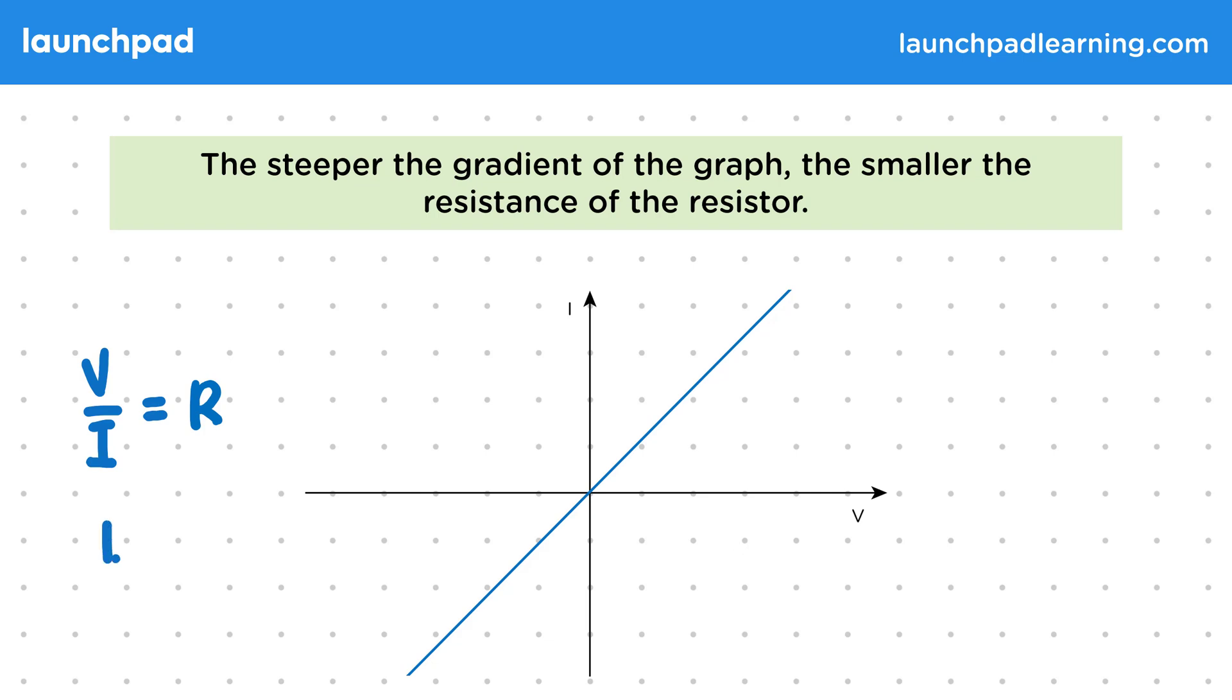So we need to calculate I over V, which from our previous equation is equal to 1 over R. So higher values of R mean smaller gradients. You won't need to be able to explain this for your exams, but it's really useful to know for understanding IV graphs in general.